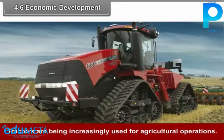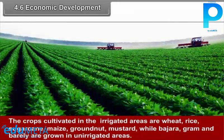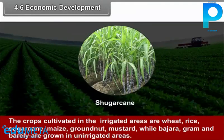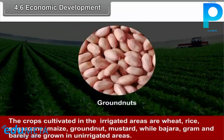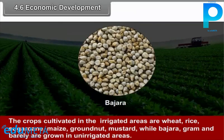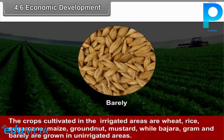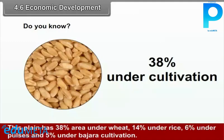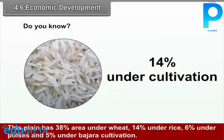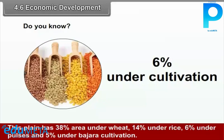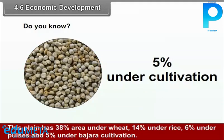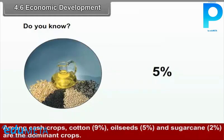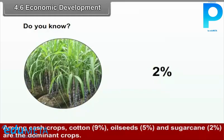Mechanized farming is practiced extensively, with tractors increasingly used for agricultural operations. Crops cultivated in irrigated areas include wheat, rice, sugarcane, maize, groundnut, and mustard, while bajra, gram, and barley are grown in unirrigated areas. This plain has 38% area under wheat, 14% under rice, 6% under pulses, and 5% under bajra. Among cash crops, cotton (9%), oil seeds (5%), and sugarcane (2%) are dominant.